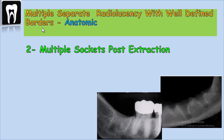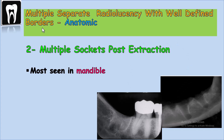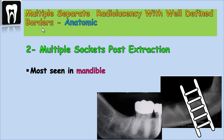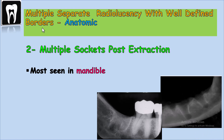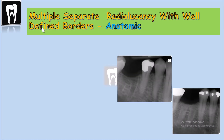Number two: multiple sockets post-extraction. In patients who had multiple teeth extracted at the same time, this is how it appears in the radiograph. Mostly seen in the mandible because in the maxilla, the trabecular pattern — which is like a web — covers the empty socket. But in the mandible, we have less trabecula with a ladder appearance, so the socket is much more obvious. The healing process starts from the lamina dura or the lateral part of the socket towards the center, and it takes time to heal.